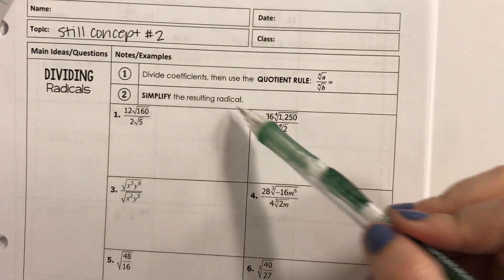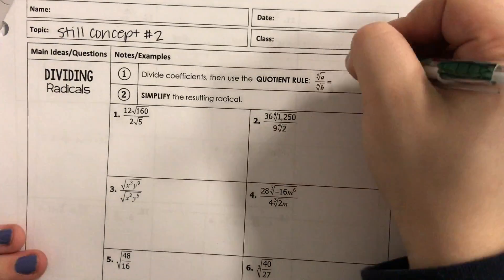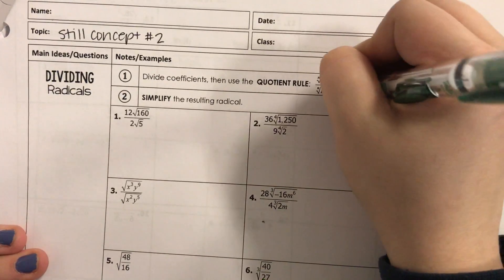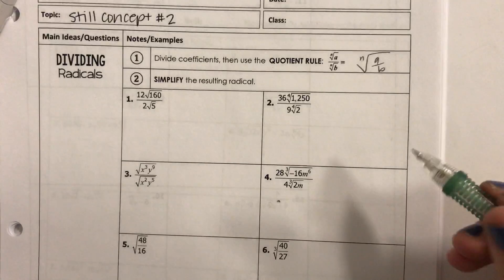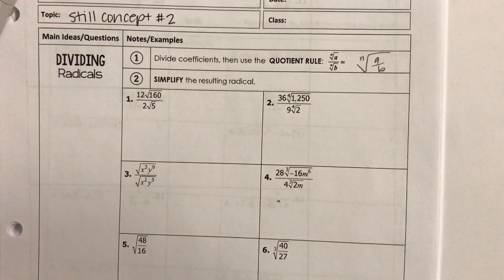So, number one, divide coefficients, then use the quotient rule. If I have the same index on top that I do on bottom, I can, that's supposed to be an n, just take whatever root that is of that fraction, a over b. Okay, I've done that before, you've probably seen me do it, and that's what we're going to do here. And then simplify the resulting radical.